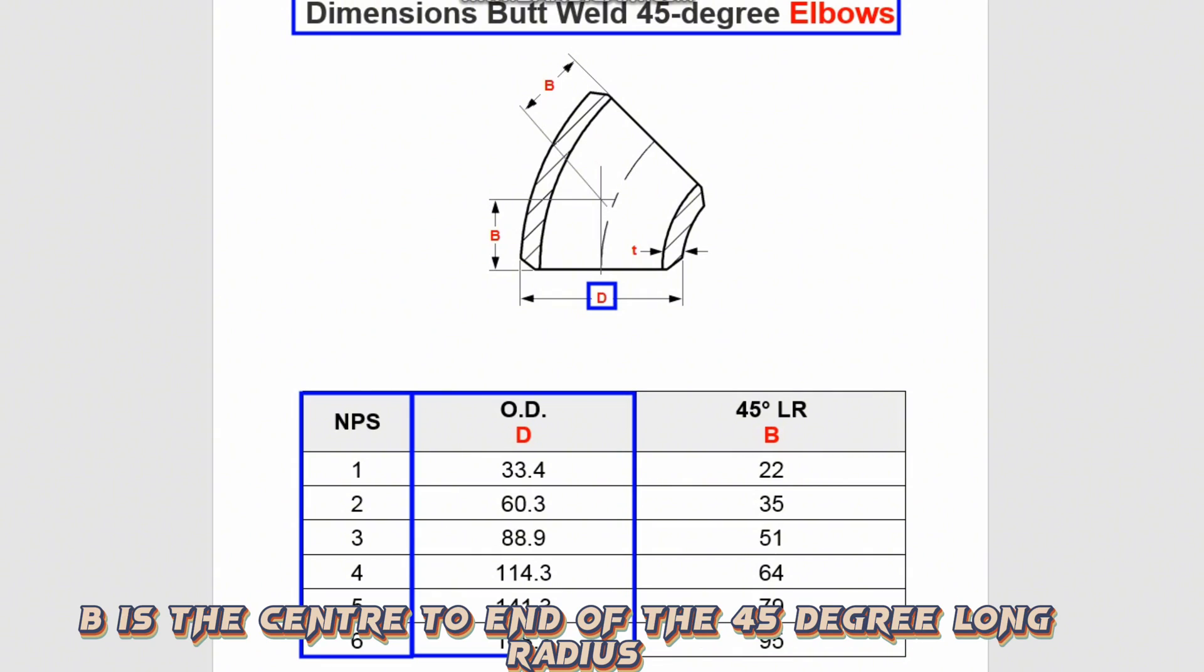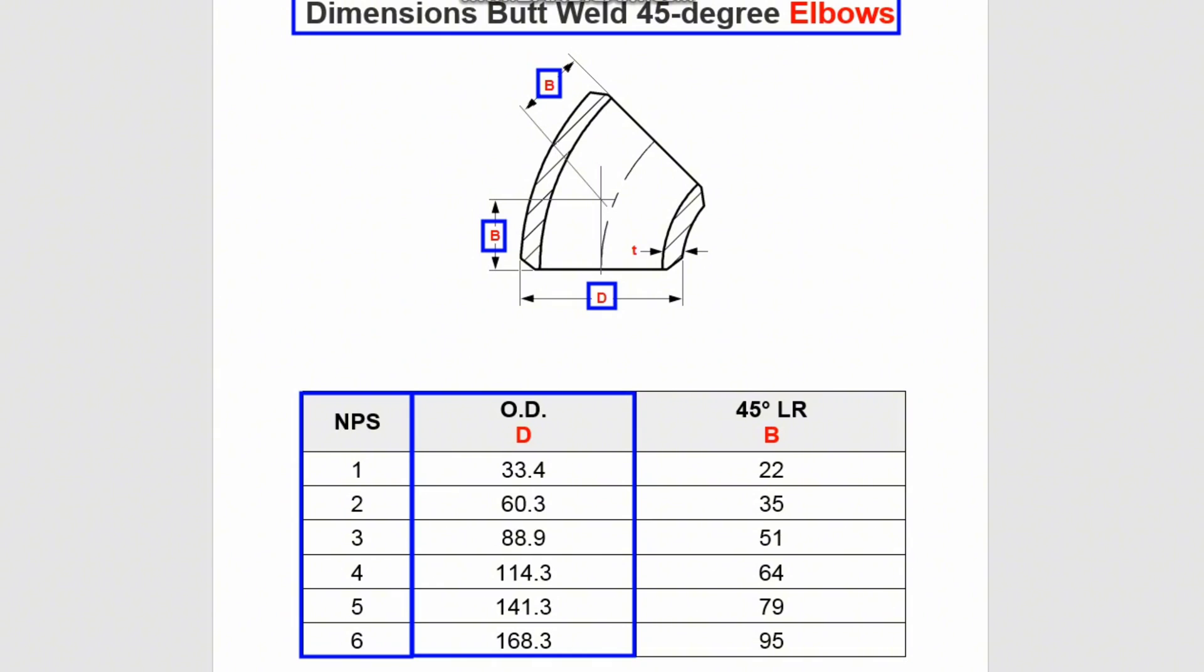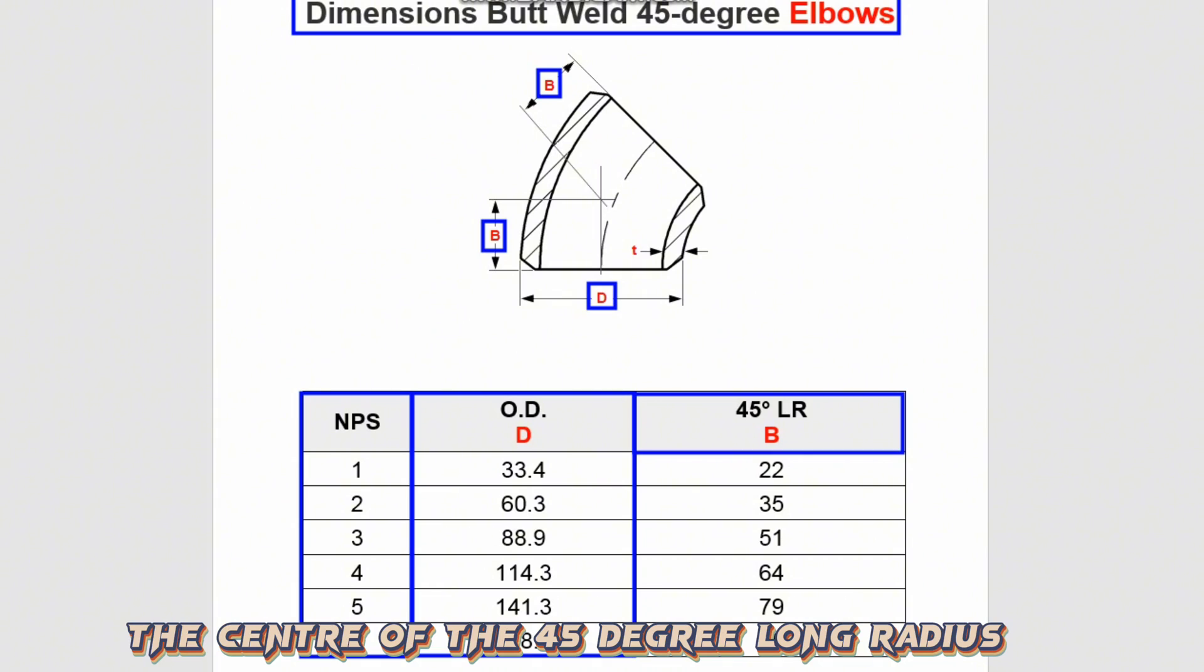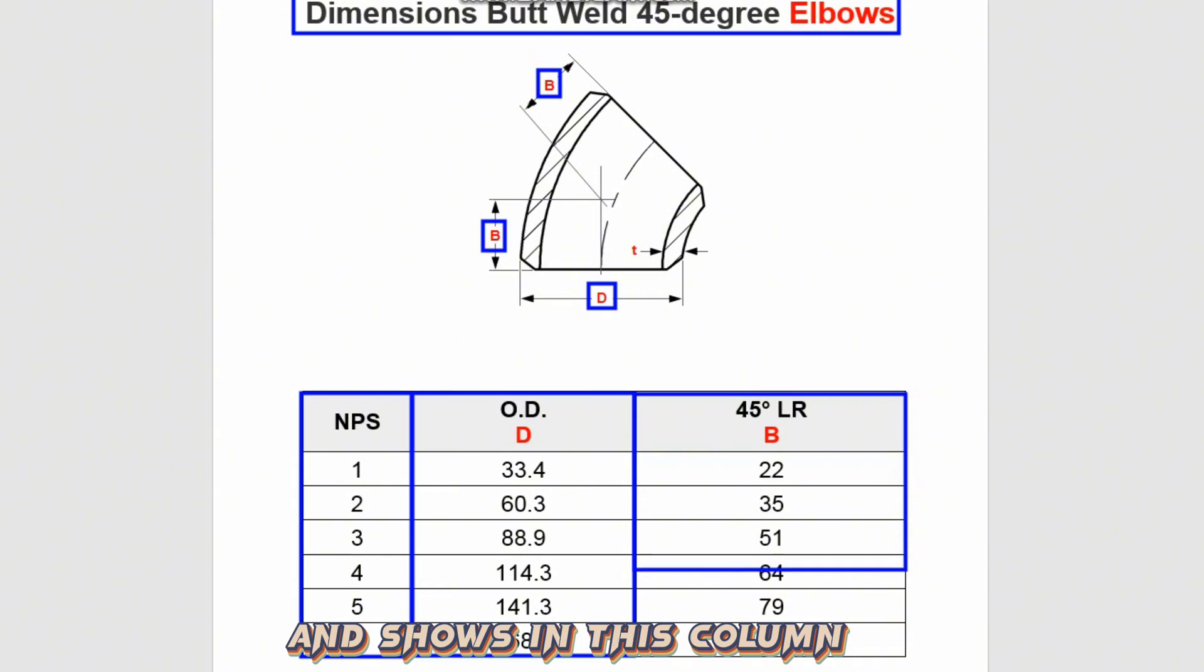B is the center-to-end of the 45-degree long radius butt weld elbows. This measurement shows the distance from the center of the 45-degree long radius elbows to the end on both sides.